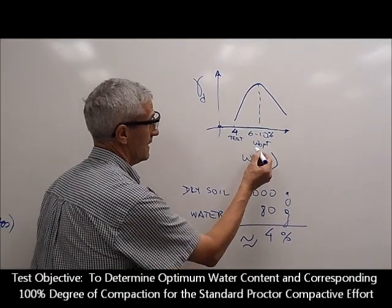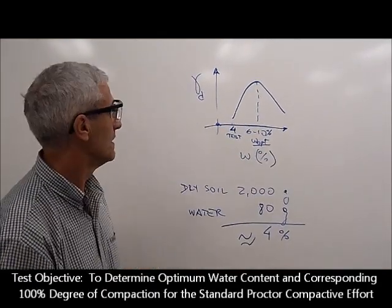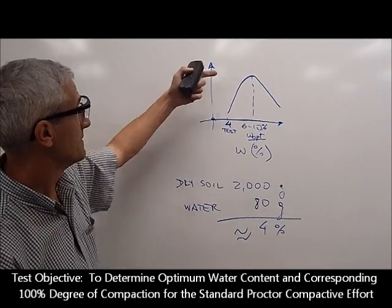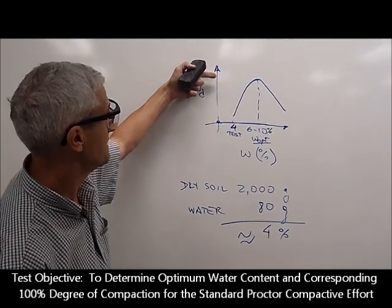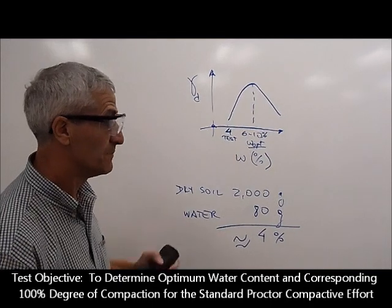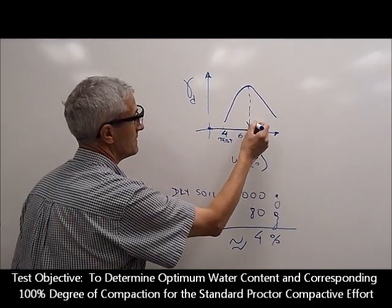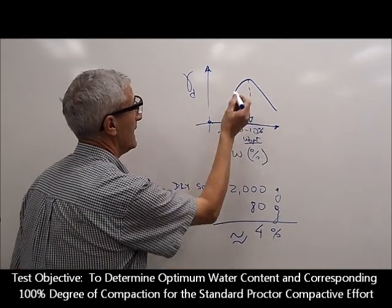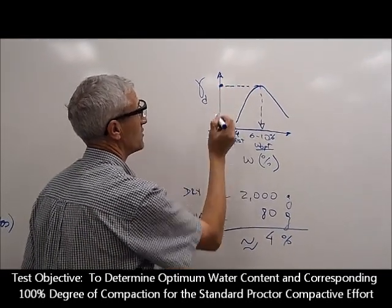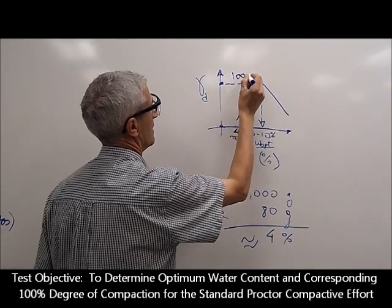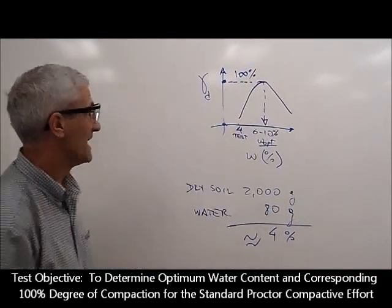To determine what's the optimal percent of moisture to achieve compaction with the same amount of energy to achieve the best unit weight, or best densification. So this is the objective to determine what this water content is and what is the maximum compaction in terms of 100% compaction.